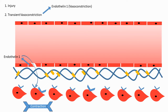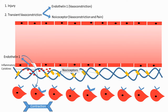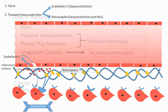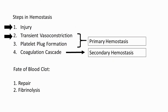Another way transient vasoconstriction takes place is through the nociceptor pathway. Injury causes inflammation, which produces cytokines. These cytokines bind onto nearby nociceptors and activate them. Activated nociceptors have two effects: they trigger pain and directly stimulate the muscles to contract. These are the two ways transient vasoconstriction occurs — through endothelin 1 release and through the nociceptor route.